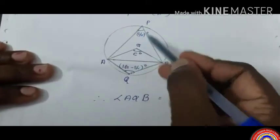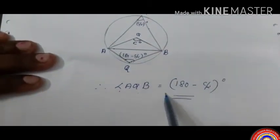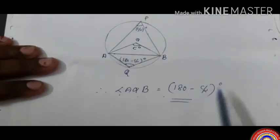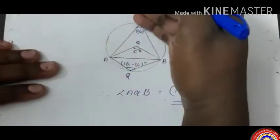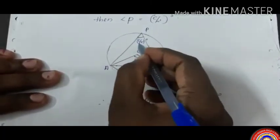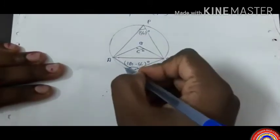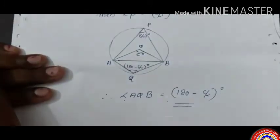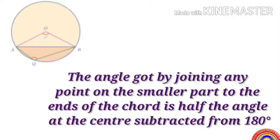Here AB is the chord and angle AQB is the angle formed on the smaller part. Angle AQB equals 180 minus C/2 degrees, which means 180 minus half of the central angle. The angle got by joining any point on the smaller part to the ends of the chord is 180 degrees minus half the angle at the center.